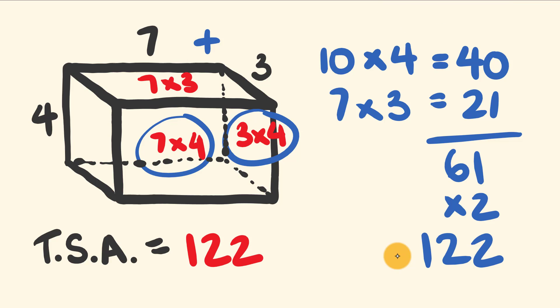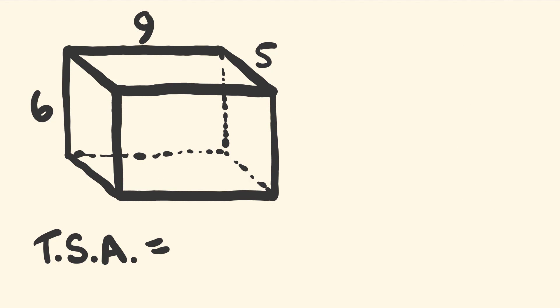So let's have a look at another example here. We have a rectangular prism that has a height of 6 units, a width of 9 units, and a depth of 5 units.